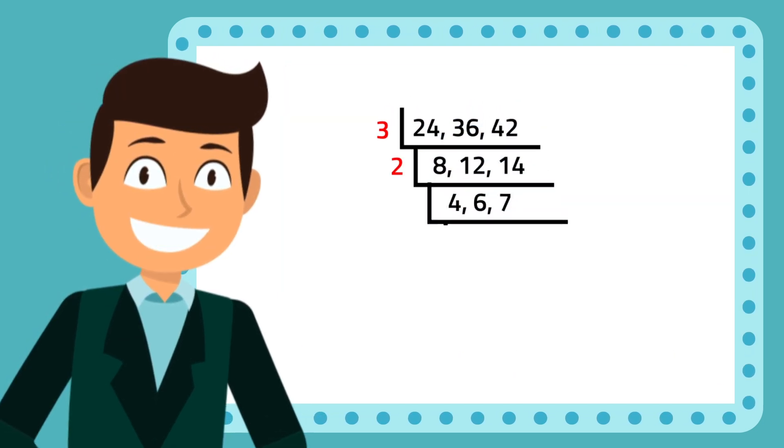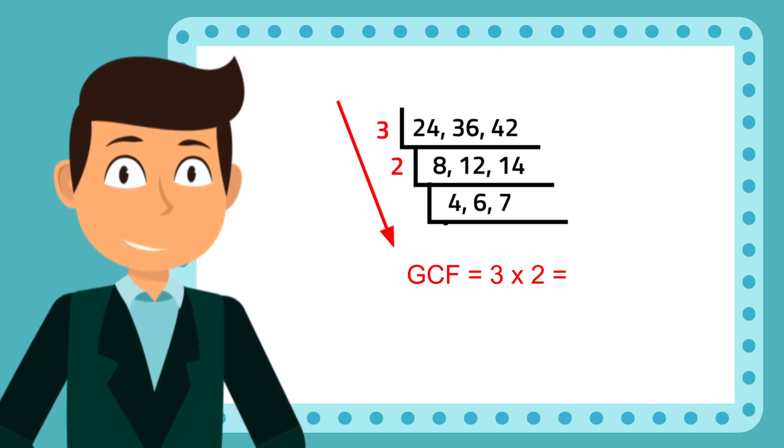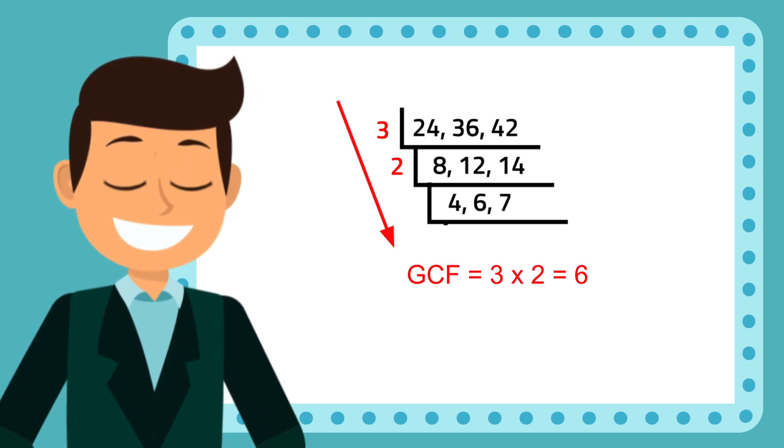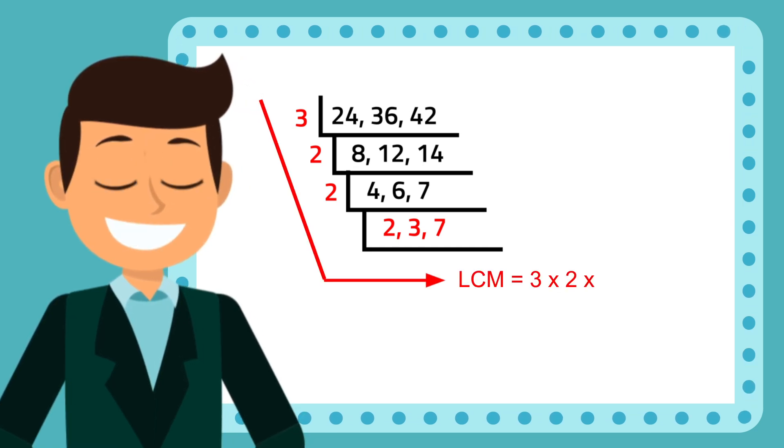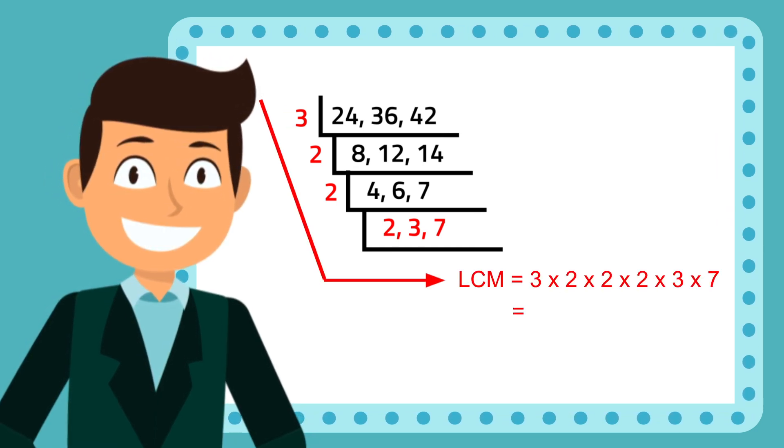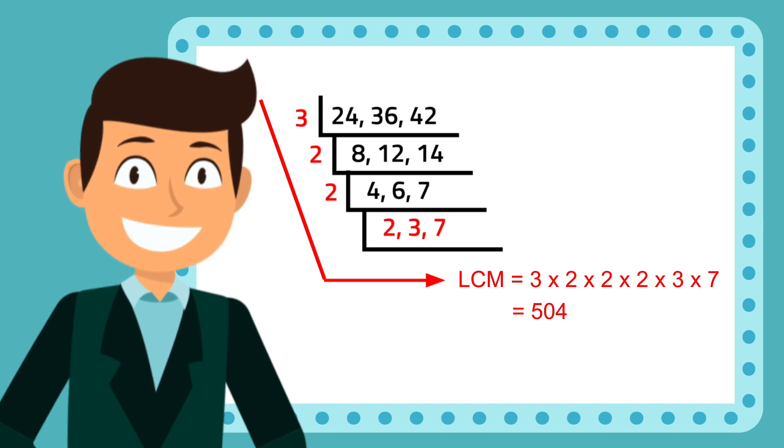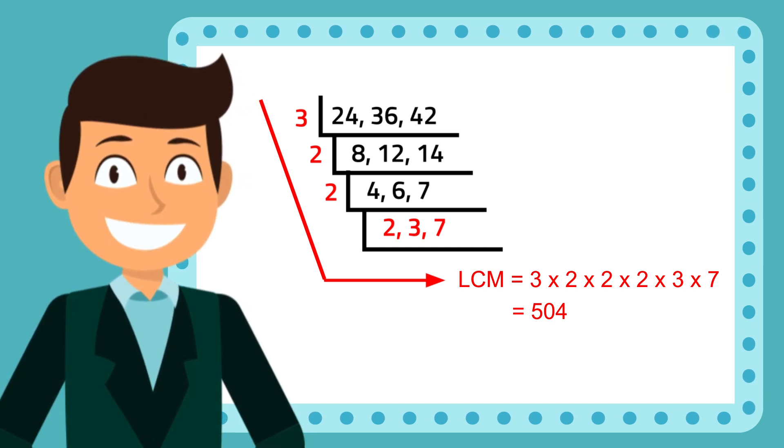To find the GCF, we get the product of the prime numbers used in each step. For the LCM, we find the product of the numbers on the left side and those in the last step of the ladder. See the numbers along the L shape to help you remember.